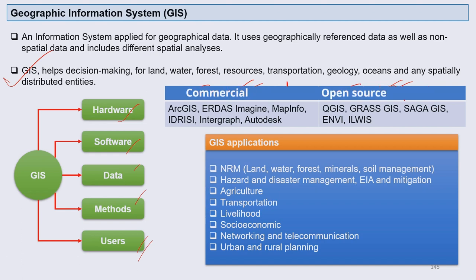There are commercial GIS tools like ArcGIS, ERDAS Imagine, MapInfo, IDRISI, and AutoCAD — these require purchasing a license. However, there are also open-source GIS tools available in the free domain like QGIS, GRASS GIS, SAGA GIS, and ILWIS.